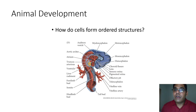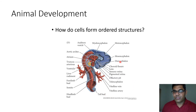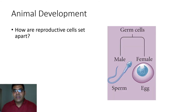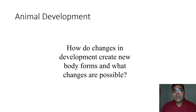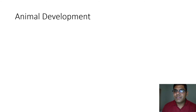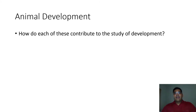How do cells form ordered structures — from a single cellular to a multicellular organism, how do cells differ and form different structures giving rise to a complete organism? Once you get the complete organism, how do germ cells develop — how do male versus female germ cells develop? And how do changes in development create new body forms, and what changes are possible?